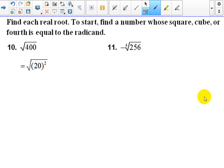10 and 11 says find each real root. To start, find a number whose square, cube, or fourth root is equal to the radicand. So they start number 10 out for us, right? So they say 400 is 20 squared. Well, that's an index of 2, right? So when you take, cancel that, you're going to get 20.